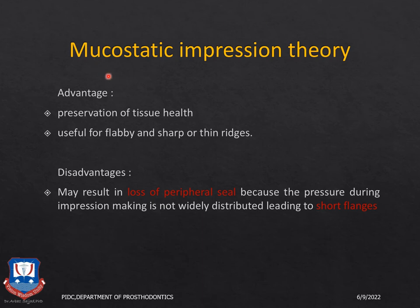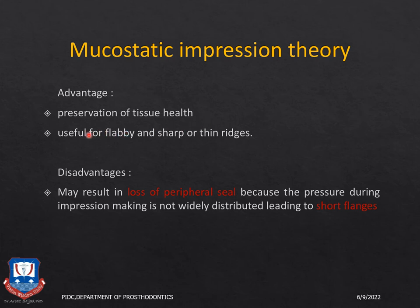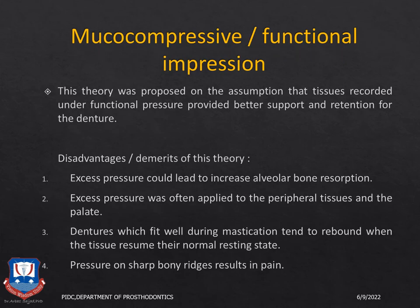The mucostatic impression technique is a pressureless technique — no pressure is applied during impression making. The rationale was tissue preservation: since no pressure is applied, blood circulation is not interrupted. It can be useful for flabby tissues or sharp spiny ridges or spicules. However, the disadvantage is loss of peripheral seal due to short flanges in the resulting denture. These techniques are now largely discarded and are of historical significance; they primarily used impression plaster, as alginate and agar were not yet available.